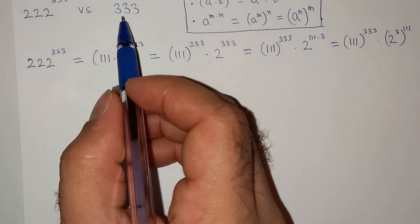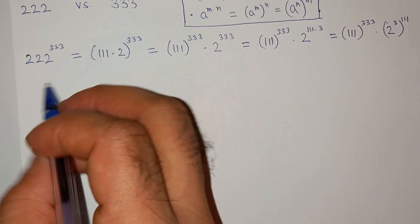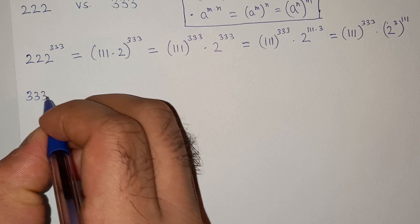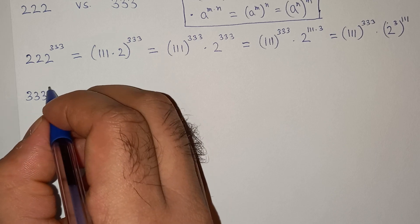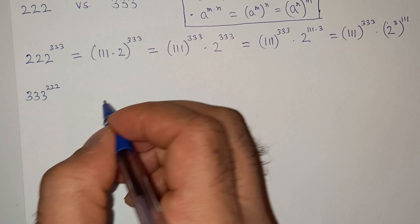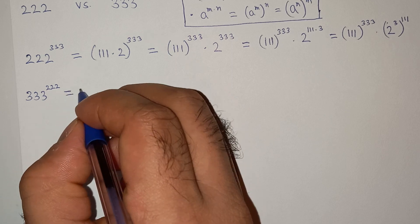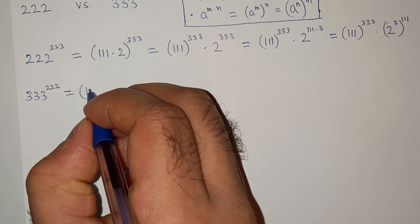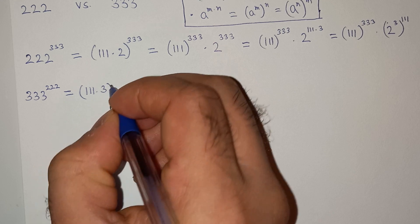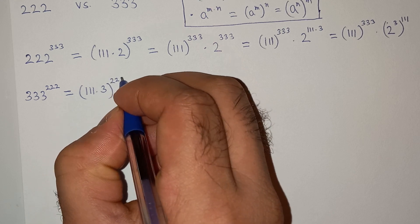Now let's try to simplify this number, which is triple 3 power triple 2. So we can write this as triple 1 multiplied 3 power triple 2.